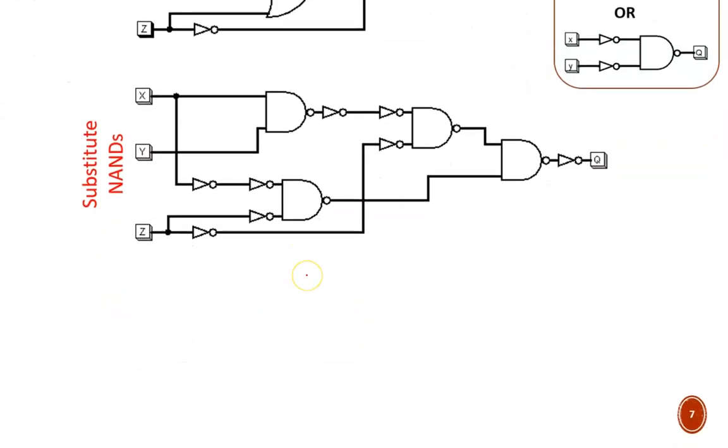This last step emphasizes why we leave them drawn as NOT gates. Any place where a NOT is followed immediately by a NOT, those operations cancel each other out, so we can eliminate both gates.